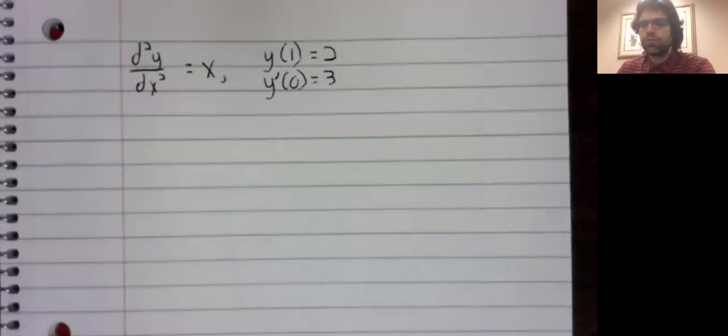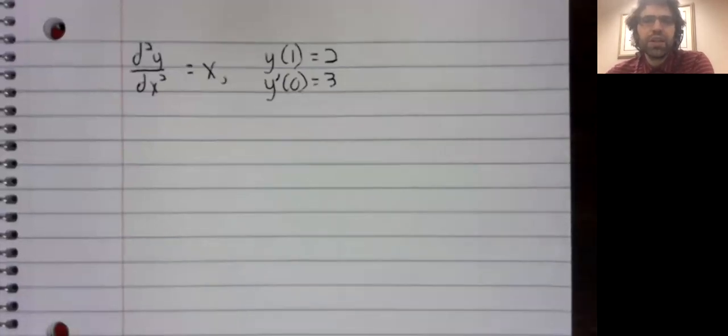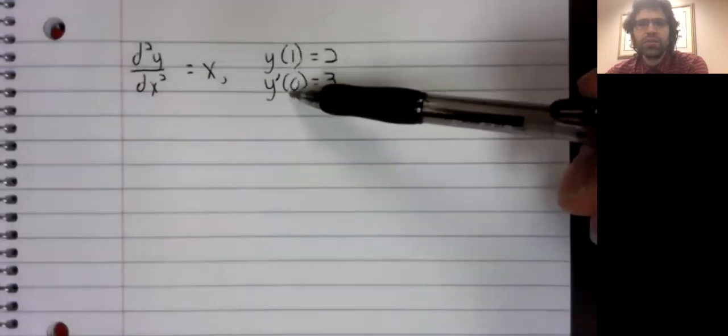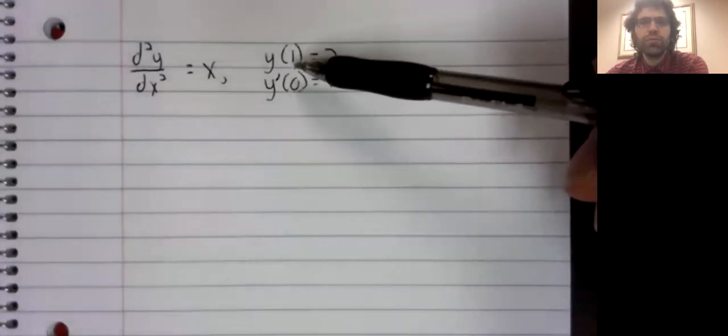The second derivative of y with respect to x equals x. And we give initial conditions to ensure uniqueness.